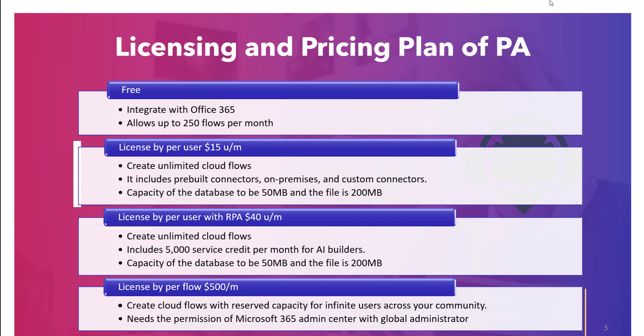Next, licensed by power user, which costs $15 per user per month. Here the user can create unlimited cloud flows that include pre-built connectors, on-premises and custom connectors. However, RPA and AI services are not included and must be purchased separately. The database capacity is 50 MB and the file capacity is 200 MB.